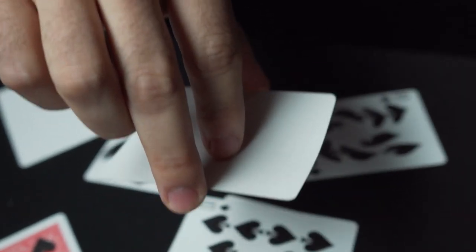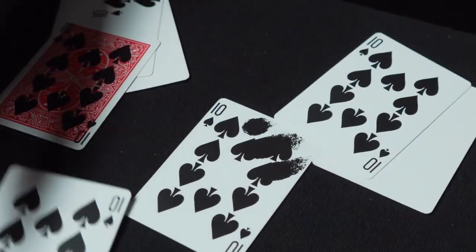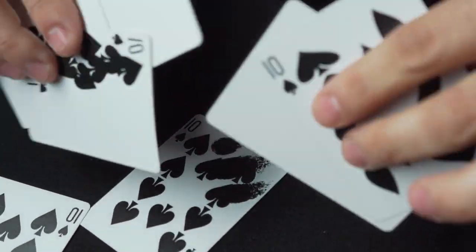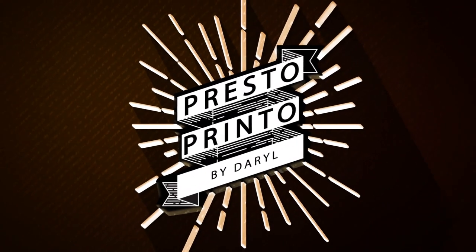Rather than spin it, I like to snap all the printing down to one side. At this point, your spectators can examine absolutely everything. Leave a lasting impression with Daryl's Presto Printo.